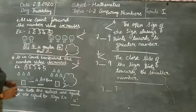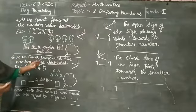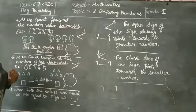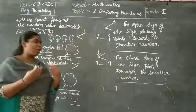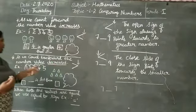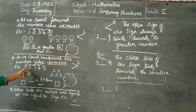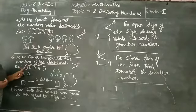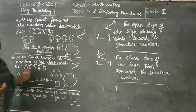And here you can see, as we come backward, the number value decreases. When we count backward, you can see here — backward. Arrow 1, can you see? So 1 is less than 2, 3, 4, 5.